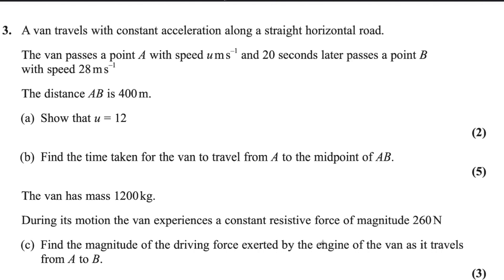Dear students, now I will answer question number 3 from Chemex 1. Here is an Edexcel A level exam taken in January 2024. A van travels with constant acceleration along a straight horizontal road. The van passes point A with speed u. 20 seconds later passes point B with speed 28. The distance is 400 meters. Show that u equals 12.